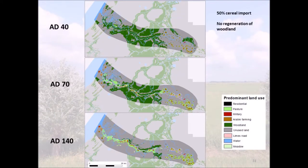Looking at the outcomes — these are maps showing how the results look. This is the 50% cereal import assumption with the no-regeneration-of-woodland scenario. You can see for AD 40, AD 70, and AD 140 that the area is slightly more occupied over time, and more and more deforestation takes place as well.